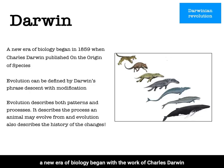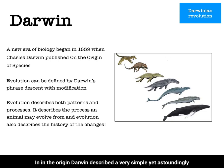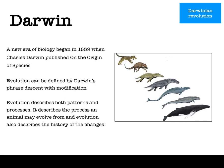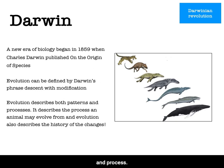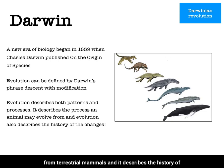A new era of biology began with the work of Charles Darwin, who in 1859 published On the Origin of Species by Means of Natural Selection. In the Origin, Darwin described a very simple yet astoundingly powerful mechanism of natural selection which produces organisms well adapted to their world. Evolution describes both pattern and process — for example, it describes the process by which whales evolved from terrestrial mammals, and it describes the history of those changes.